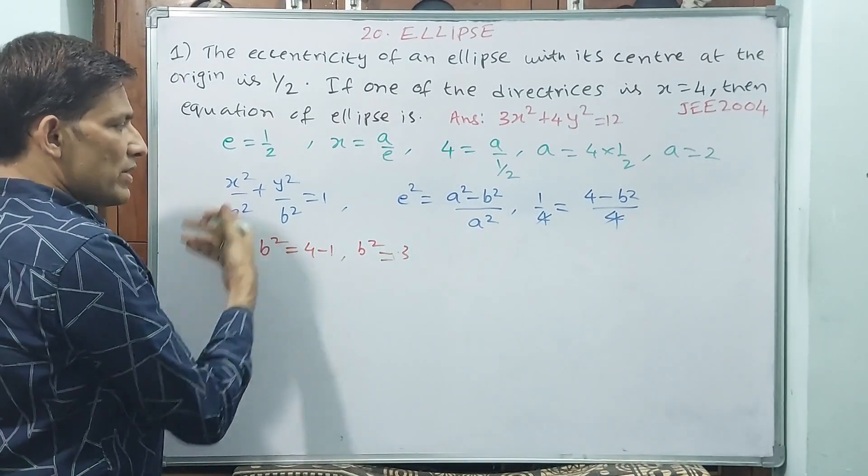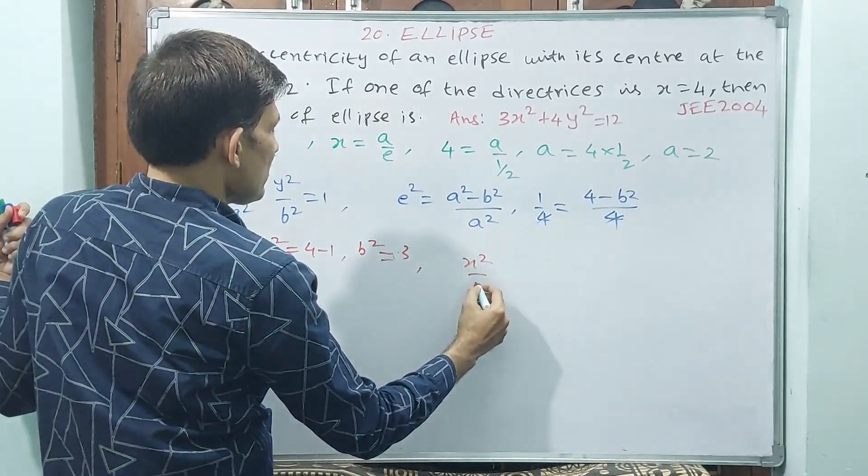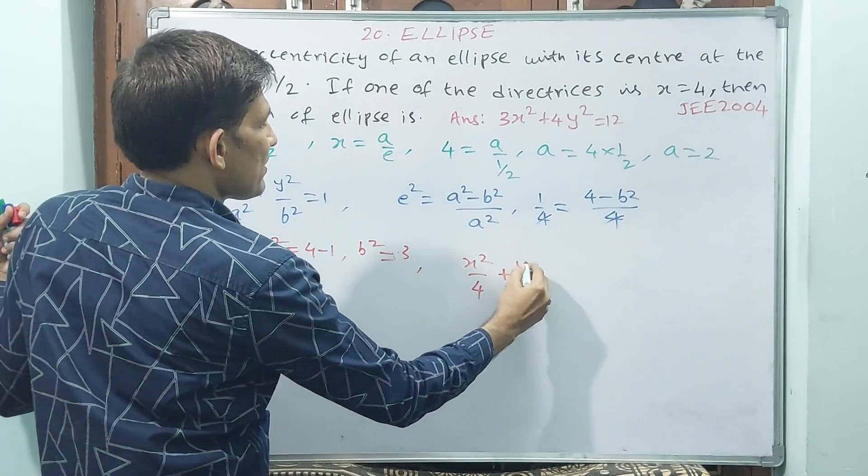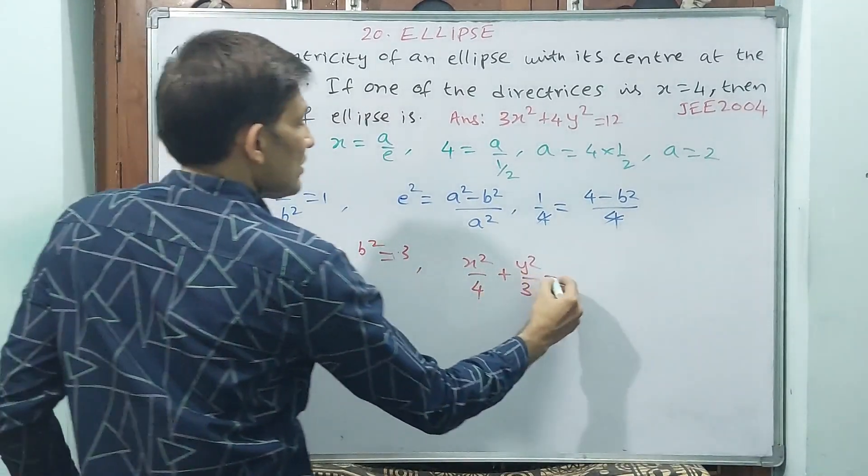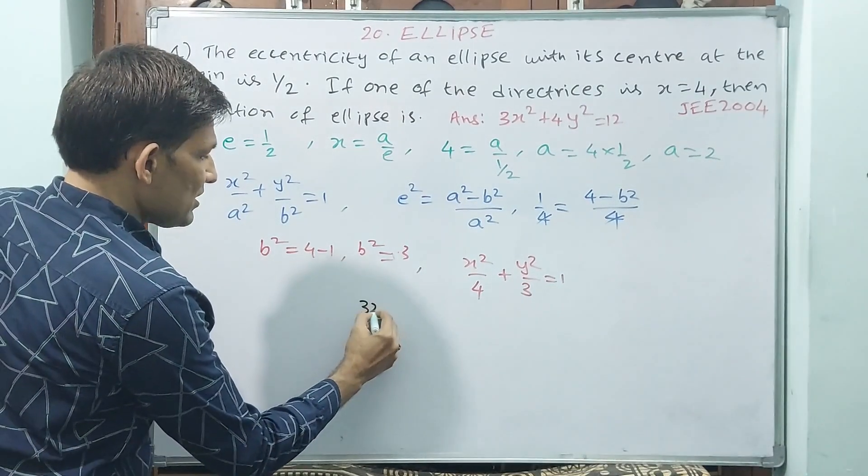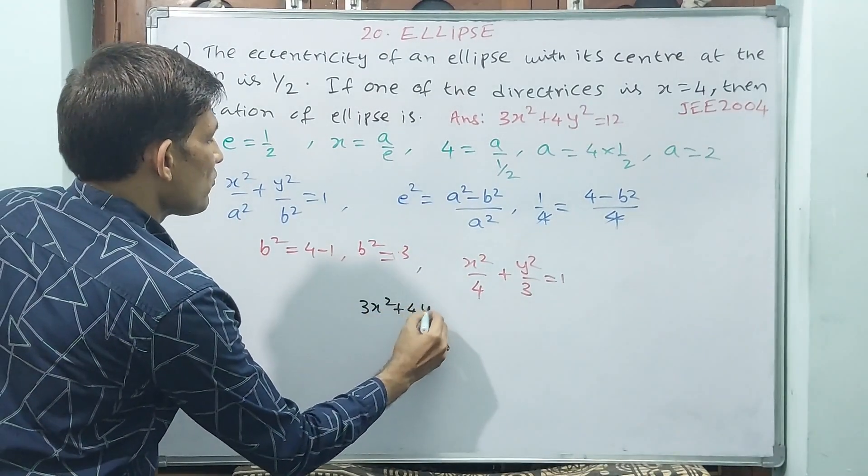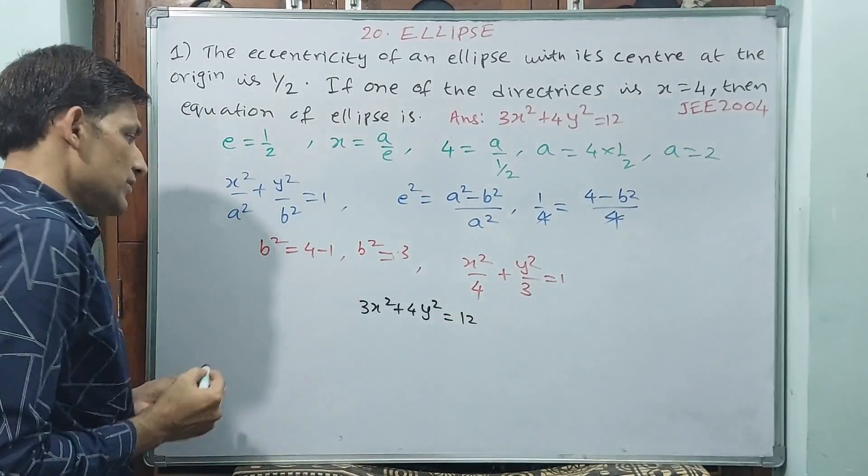Now we are having a² and b², then you can write this equation. Equation is what? x²/a² plus y²/b² equals 1, or else you cross multiply: 3x² plus 4y² by 12 equals 1, or else equals 12.